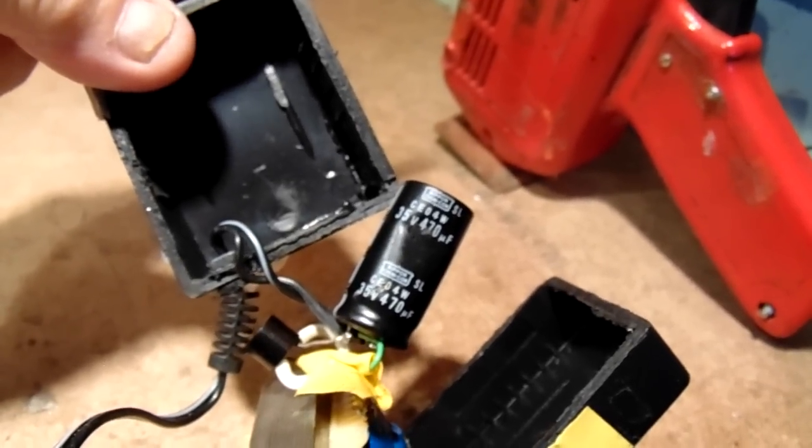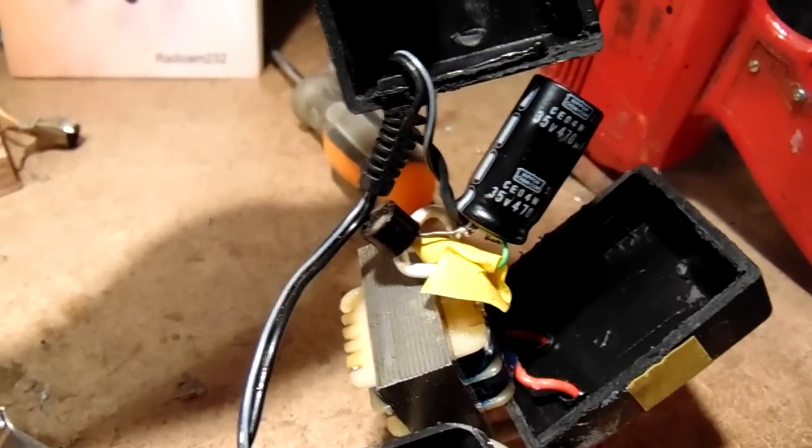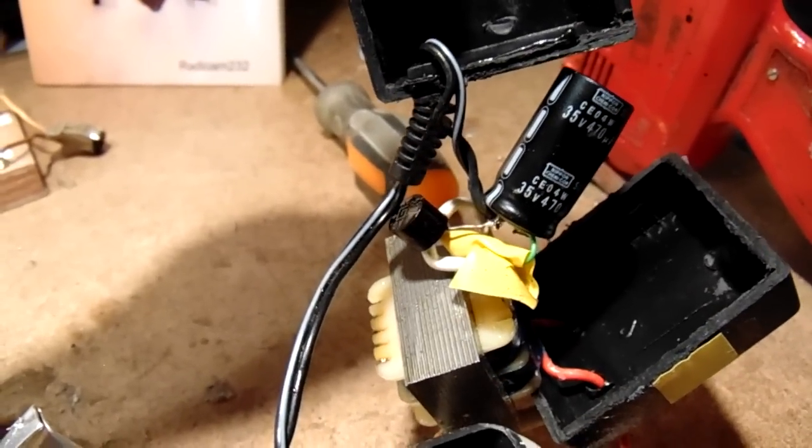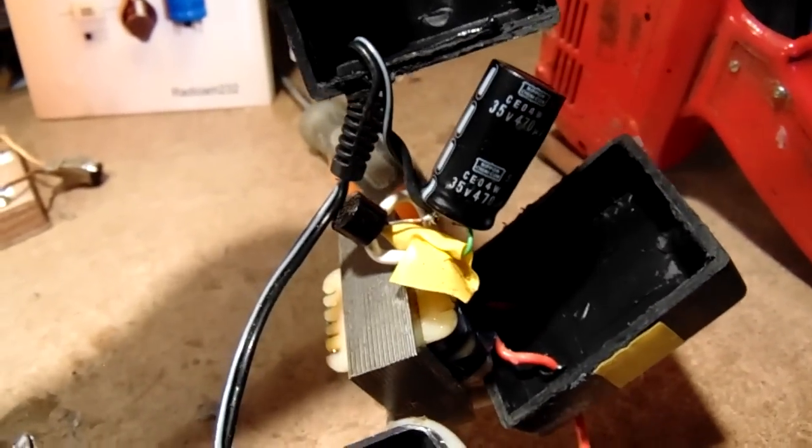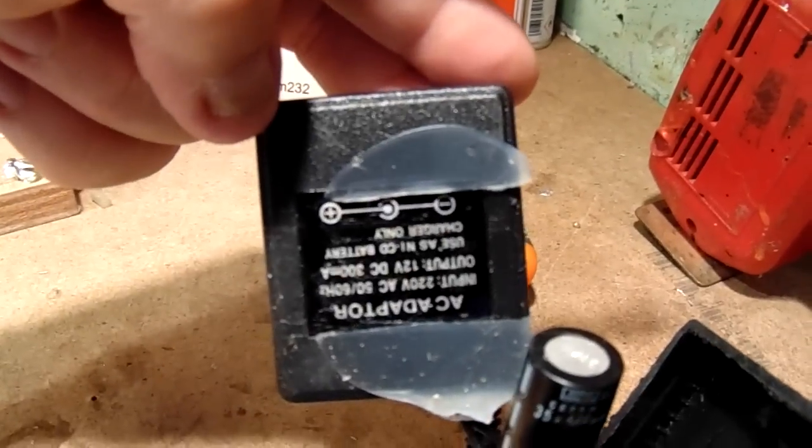470 microfarad cap. Small transformer in the middle of the screen. Now the bridge rectifier, the black thing in the middle of the screen. Very small transformer. All from a wall transformer. And that's mounted here inside.